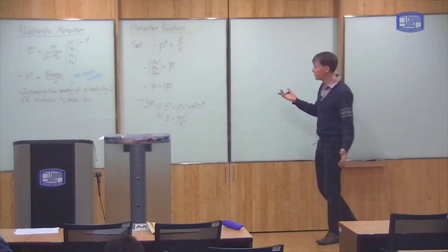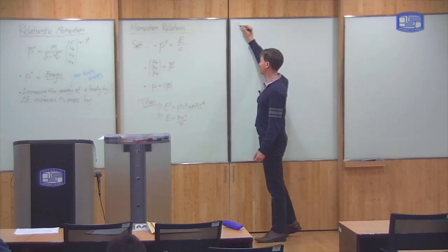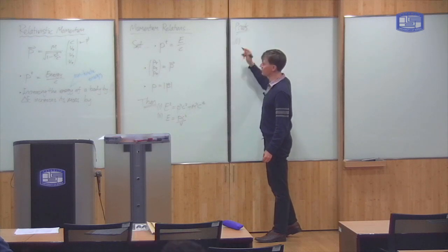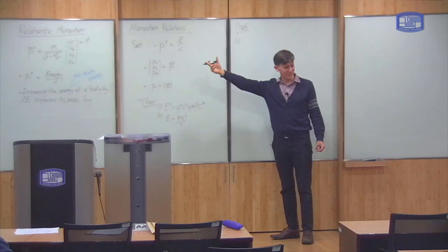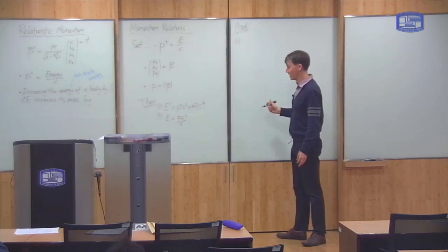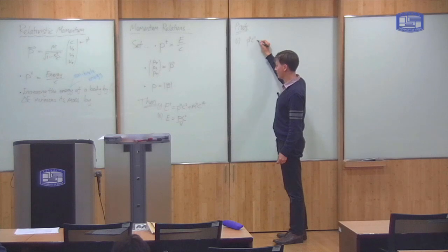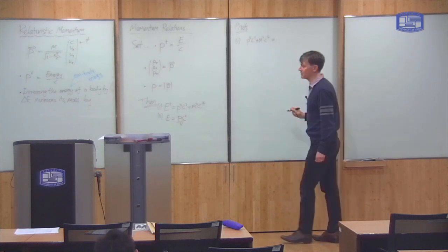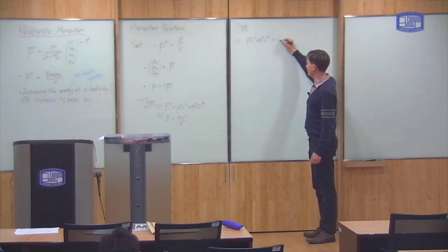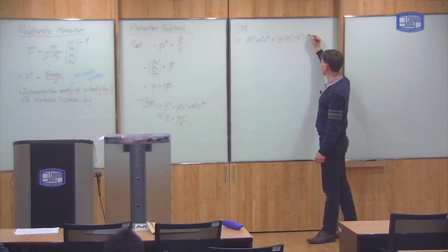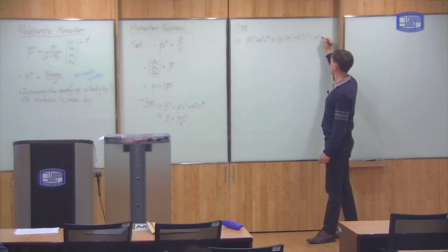So these are not hard to prove, so let me just quickly prove them for you now. You basically just have to substitute into the formula and then check it works. So proof number one: p squared c squared plus m squared c to the fourth. Well, p squared means px squared plus py squared plus pz squared, c squared, m squared c to the fourth.